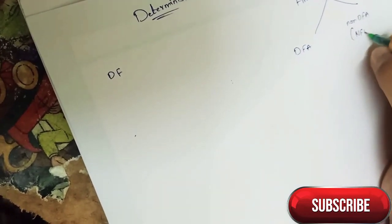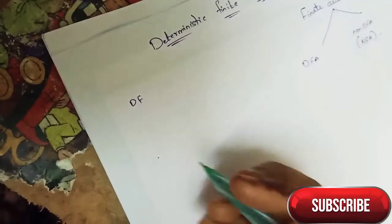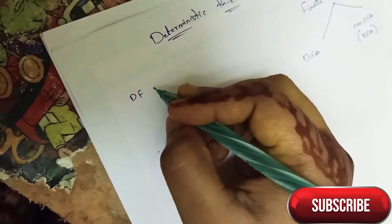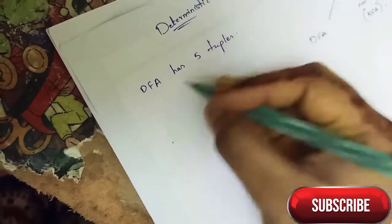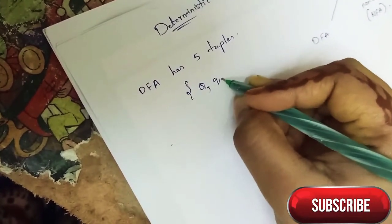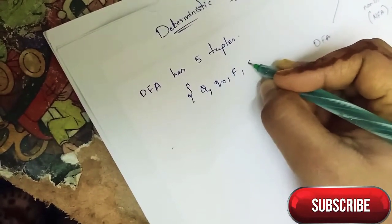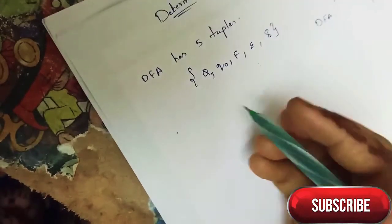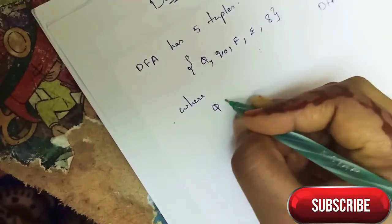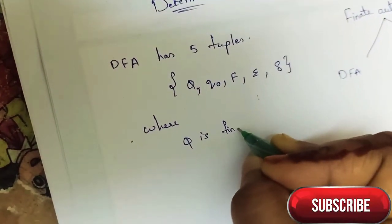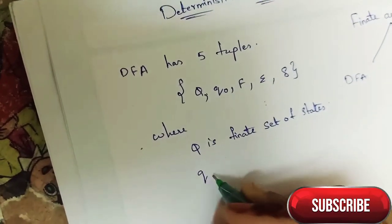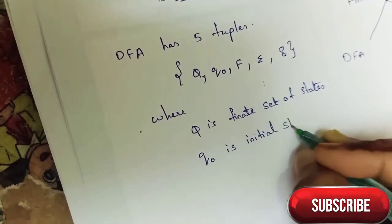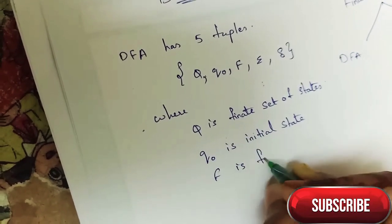Deterministic finite automata contains finite number of states. DFA has five tuples: Q, Q naught, F, epsilon, and Delta, where Q is finite set of states, Q naught is initial state, and F is final state.